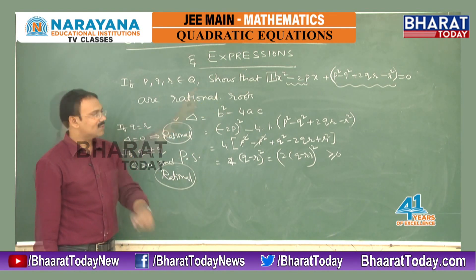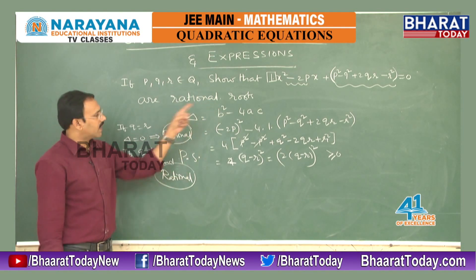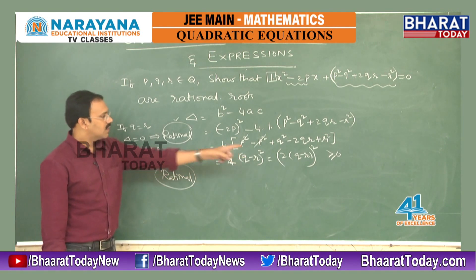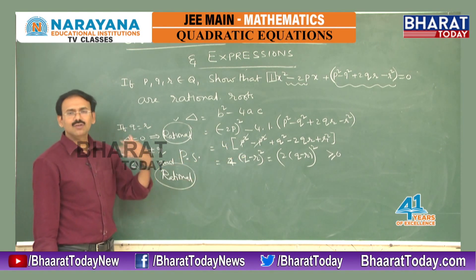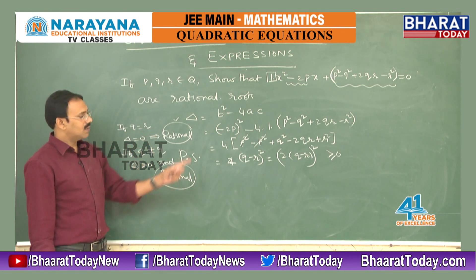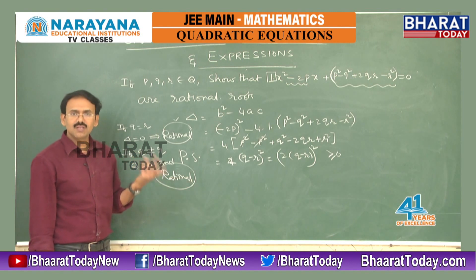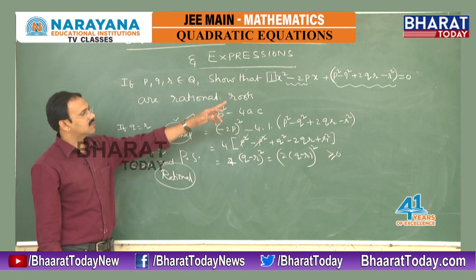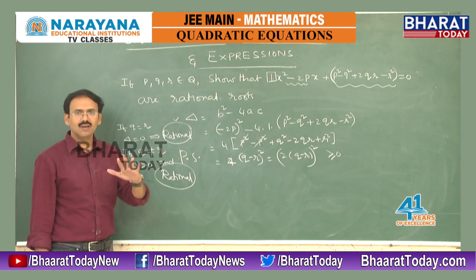Let me repeat. The quadratic equation is given with rational coefficients. I computed delta, which equals 4(Q - R)². If Q equals R, delta is 0 and the roots are rational. If Q is not equal to R, delta is positive and a perfect square, so the roots are rational and distinct. Hence, in either case, the roots of this equation are rational.